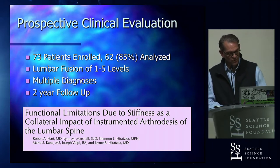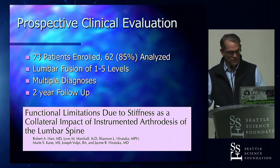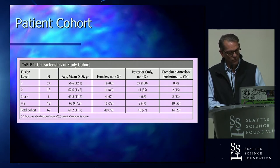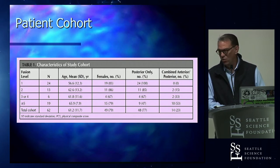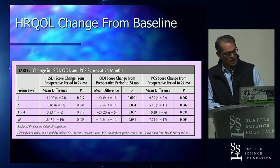We then started a single-center prospective study with multiple fusion levels from one to five-plus levels, covering multiple diagnoses — revision patients, discogenic back pain, deformity, and spondylolisthesis — all followed to a minimum two-year follow-up. This really comes down to three main cohorts: one-level fusions, two-level fusions, and five-or-more-level fusions.